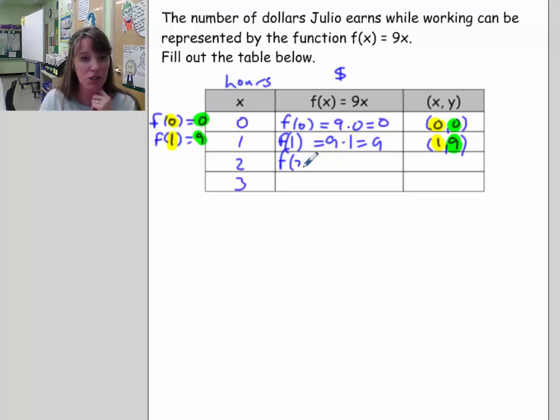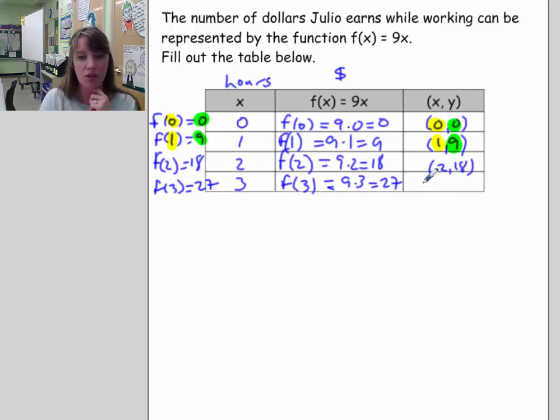So f(2), I'm taking f and I'm replacing 2 here. The function evaluated at 2 would be 9 times 2 or 18. So f(2) is equal to 18. That leads us to the coordinate pair (2,18). f(3) is equal to 9 times 3, which is 27. So f(3) is 27, giving us (3,27). This is just saying the function evaluated for the x value of 3 is equal to 27.